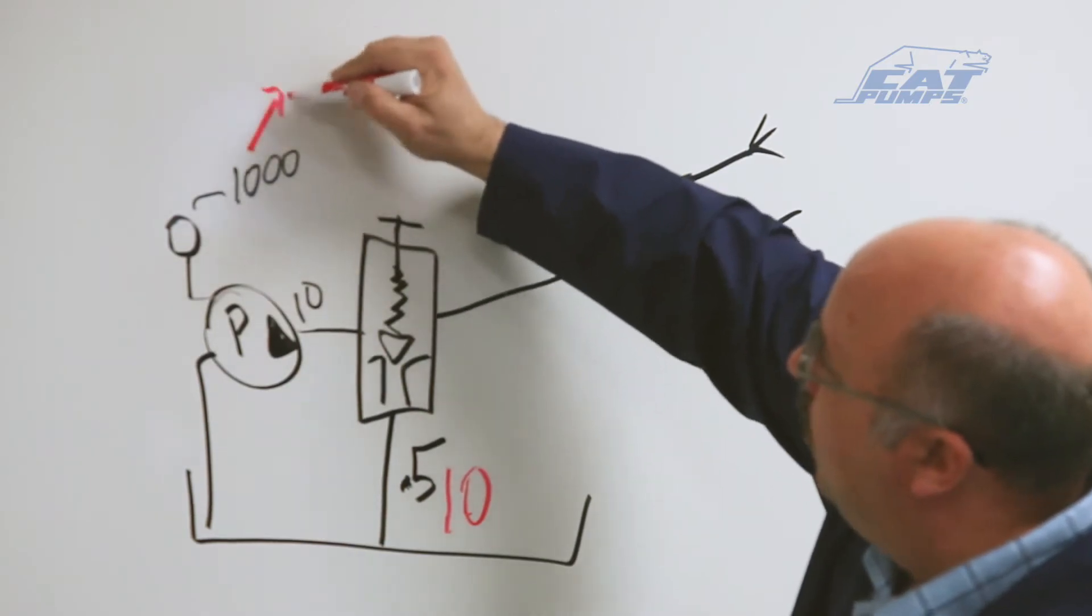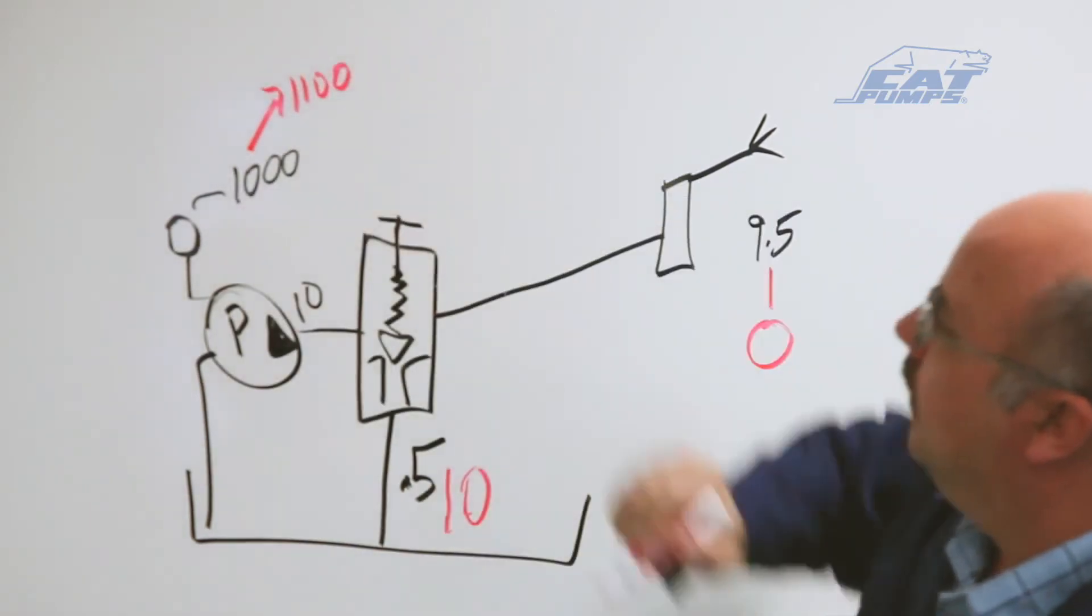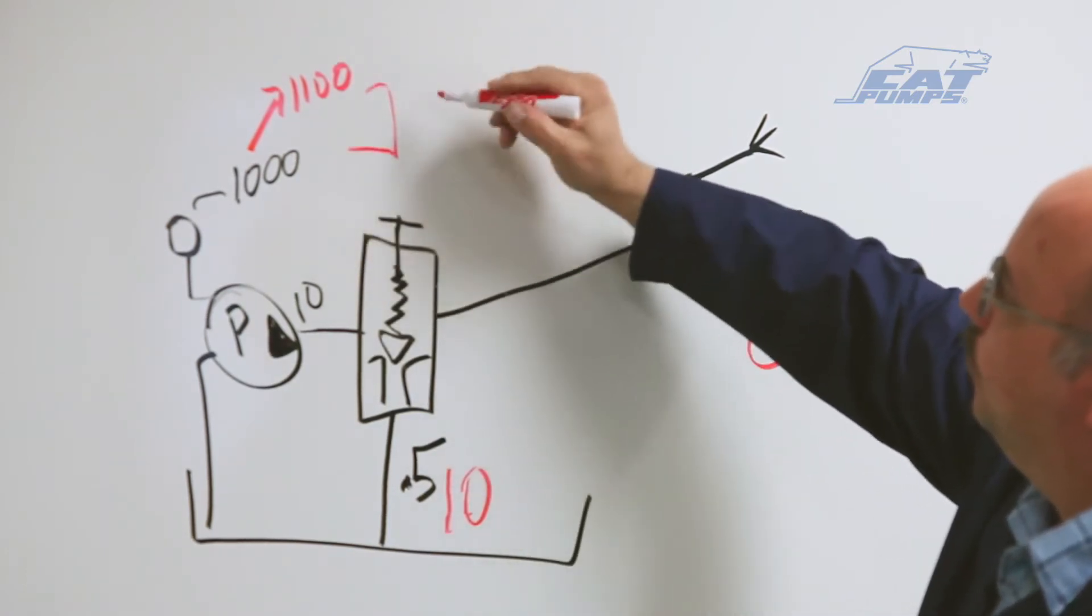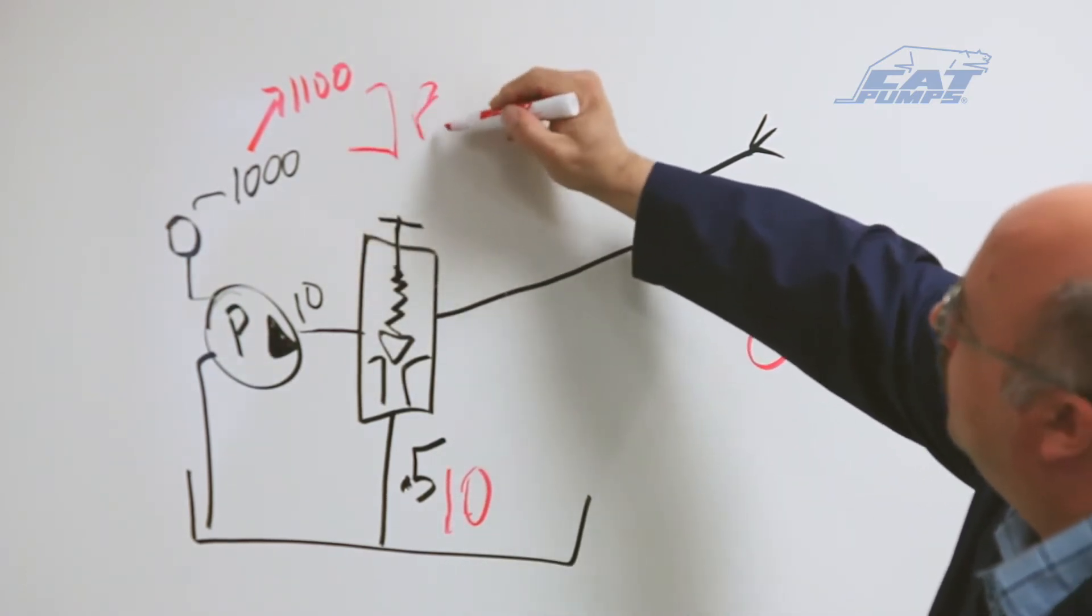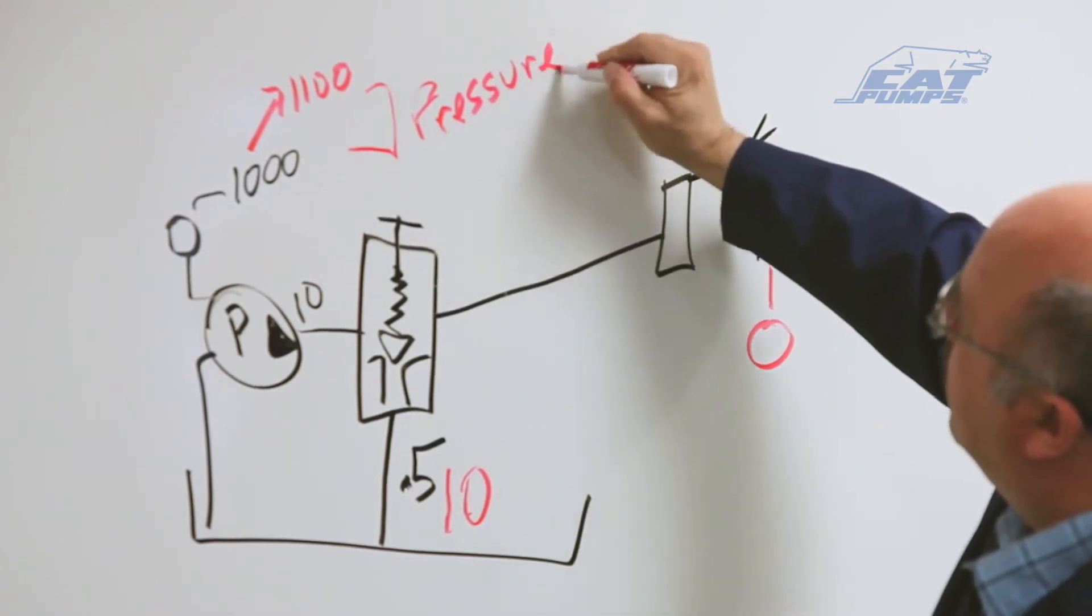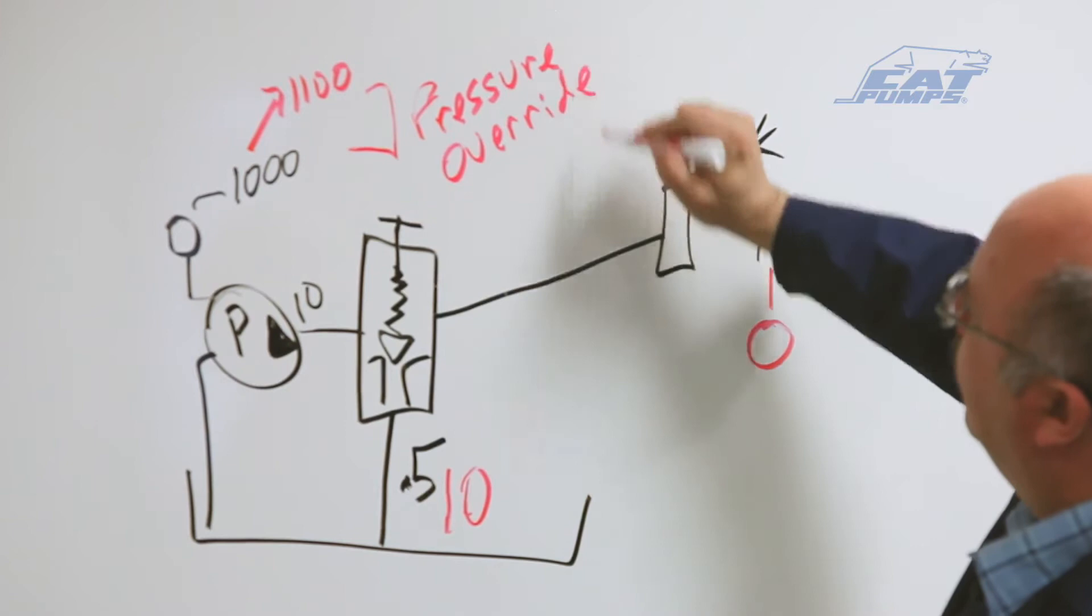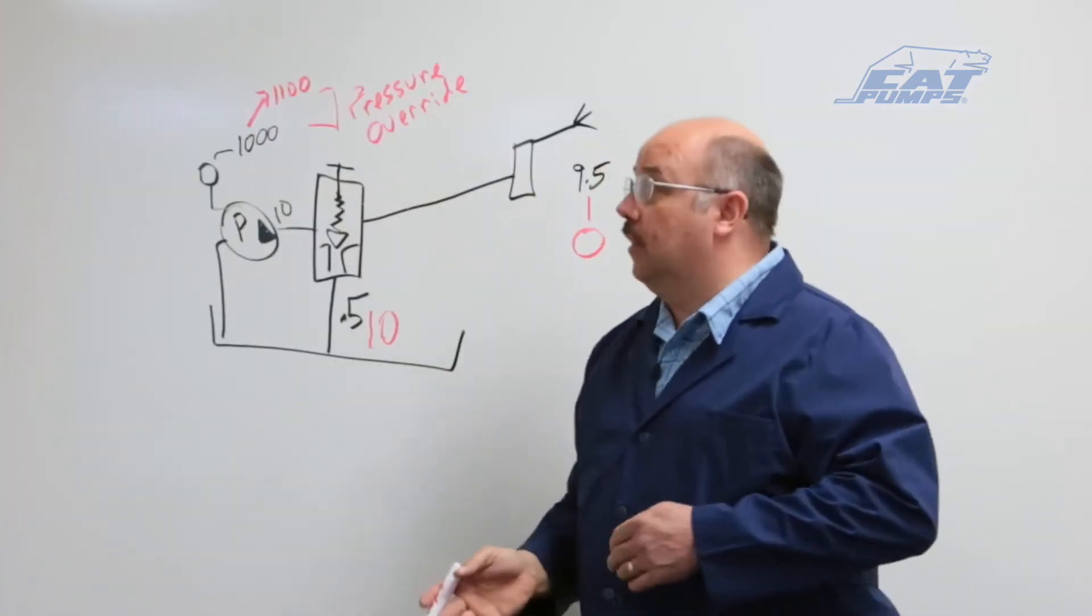And that's the pressure override. The difference here—that 100 psi increase—is pressure override. That's the definition. That's what pressure override is.